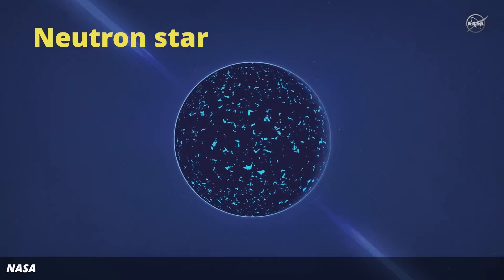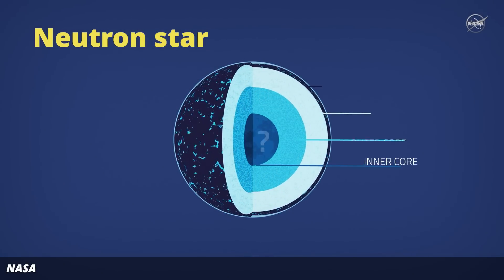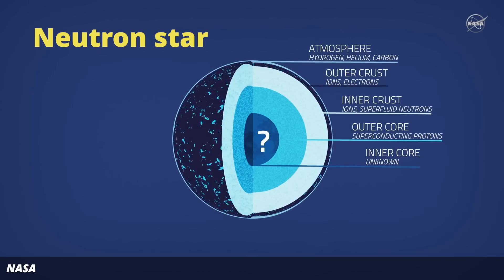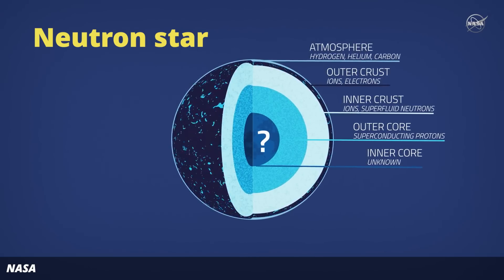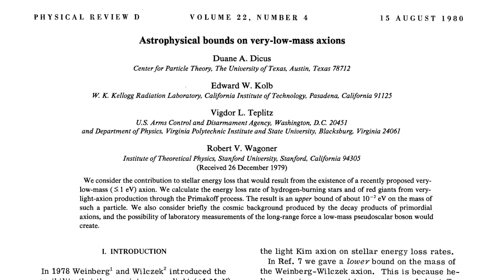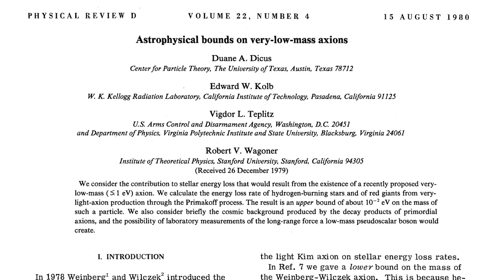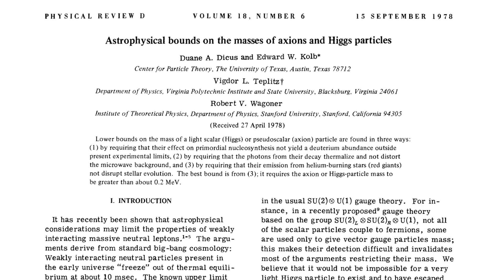if axions existed, they'd be emitted in large numbers from neutron stars, and the neutron stars would cool very quickly. By 1980, it was clear that observations were just incompatible with the existence of axions. After that happened,